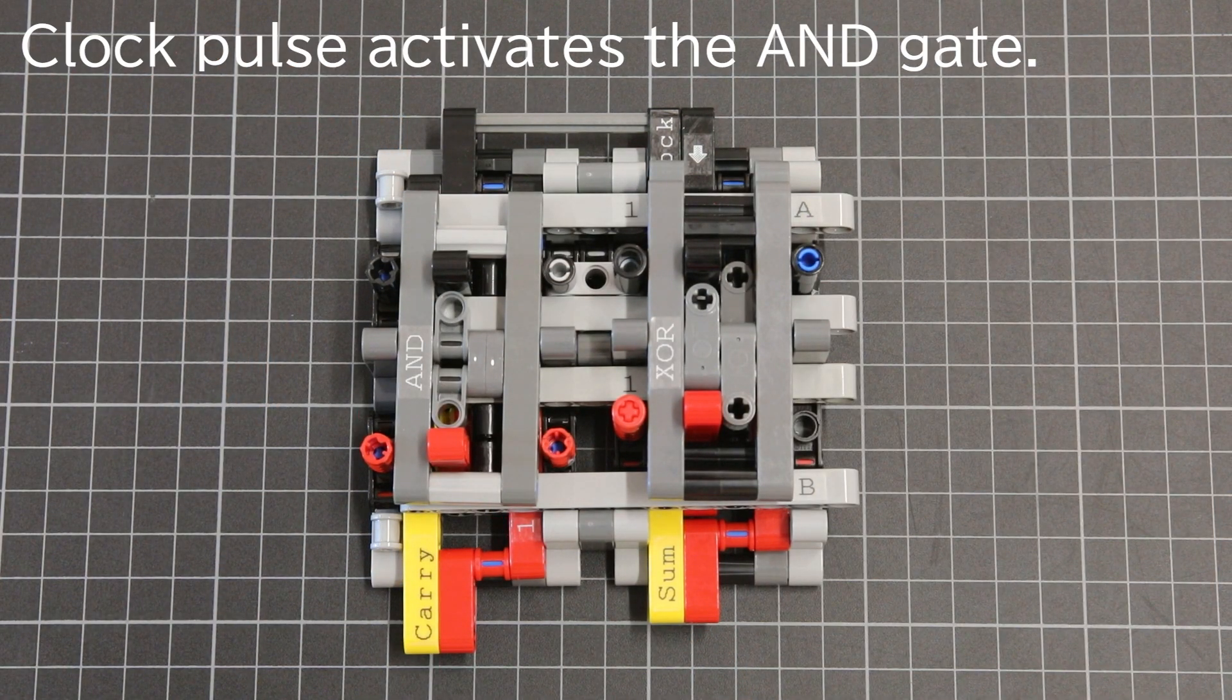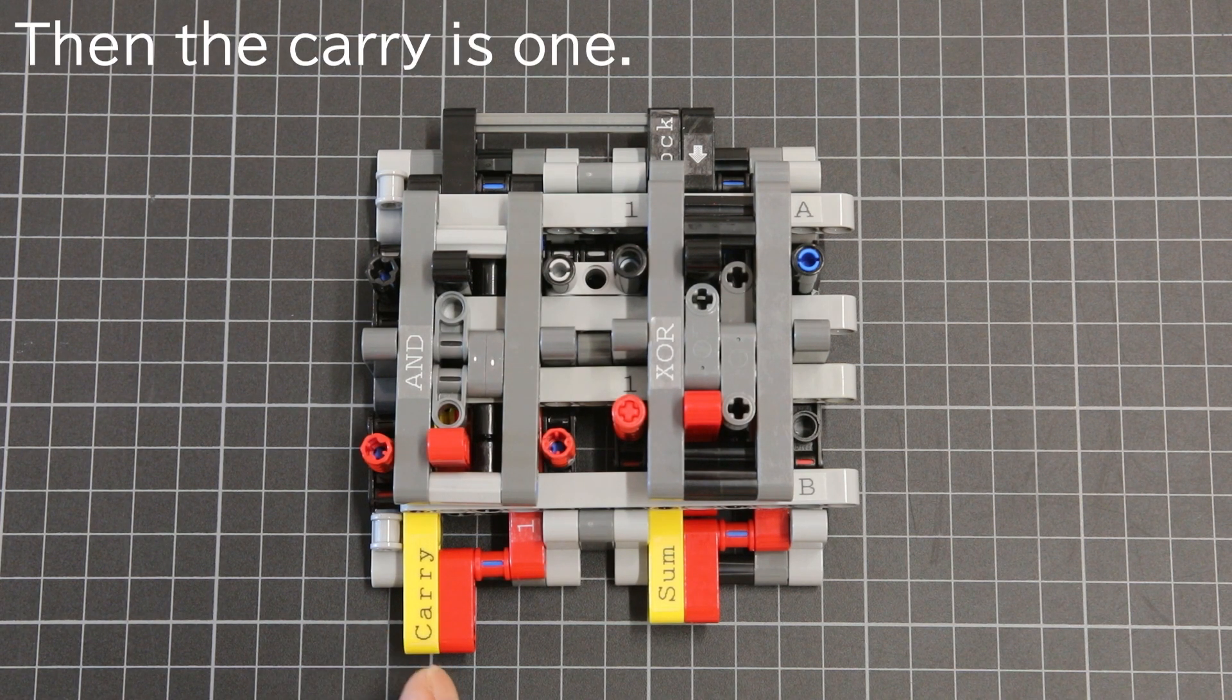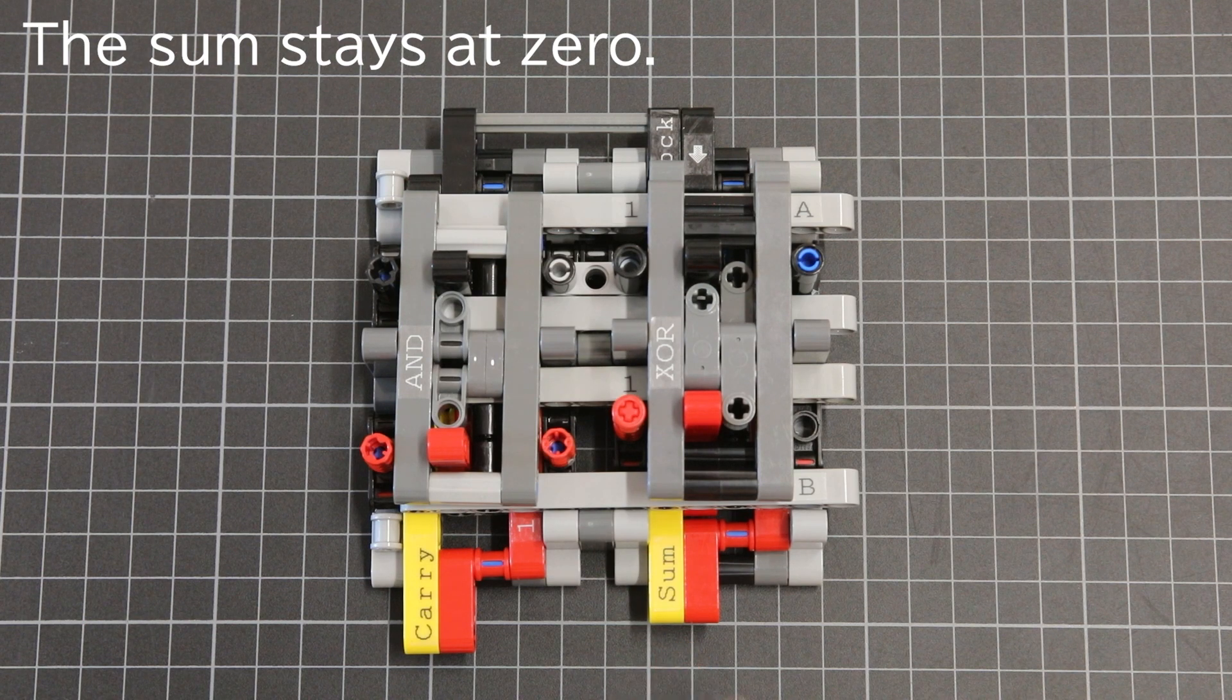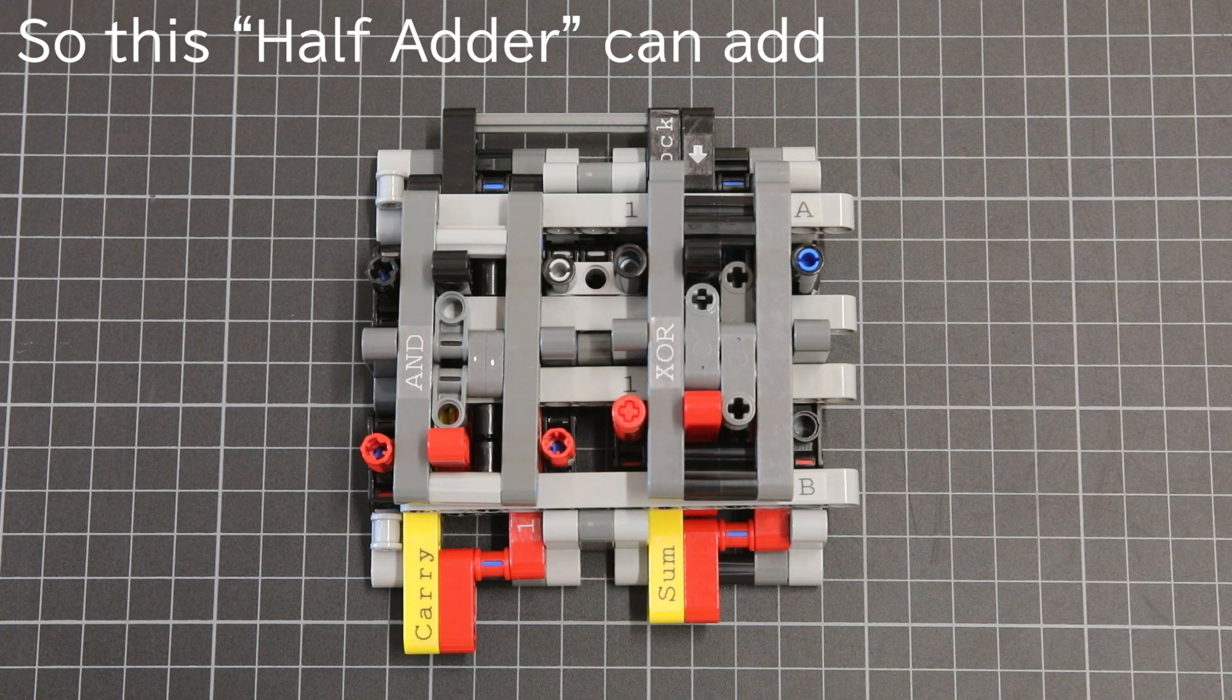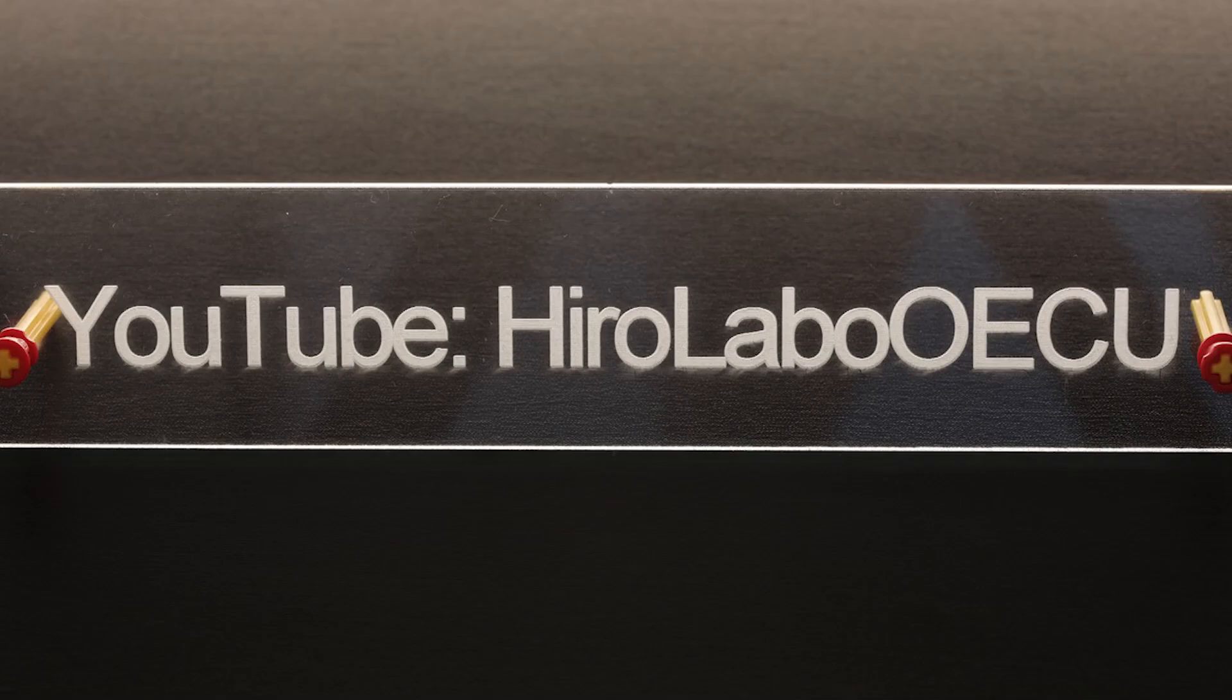The clock pulse activates the AND gate. Then the carry is 1. The sum stays at 0. So this half-adder can add two single-bit binary digits correctly. Thank you for watching.